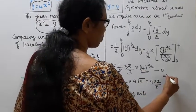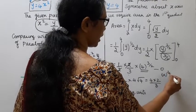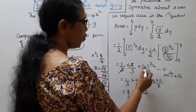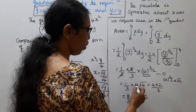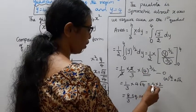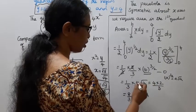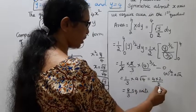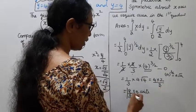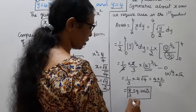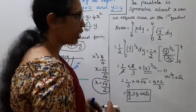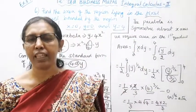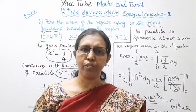Now, 4 power 3 by 2 is equal to 4 into root 4, which equals 4 into 2 equals 8. So the area is 1 by 3 times 8, equal to 8 by 3 square units. If you are able to do this, subscribe to the channel, click the bell button.